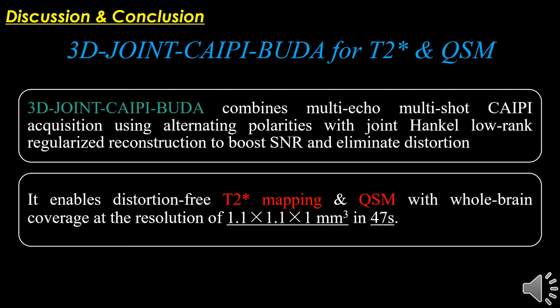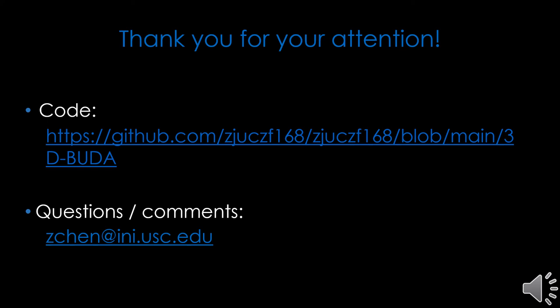Therefore, we can draw the conclusion that our proposed 3D joint KP BUDA combines multi-echo multi-shot KP acquisition using inversely polarized shots with joint Hankel low-rank image reconstruction to boost SNR and eliminate distortion, which enables distortion-free T2-star mapping and QSM with whole-brain coverage at a resolution of 1.1 by 1.1 by 1.1 millimeters in 47 seconds. Thank you for your attention. We are always open to questions and comments.